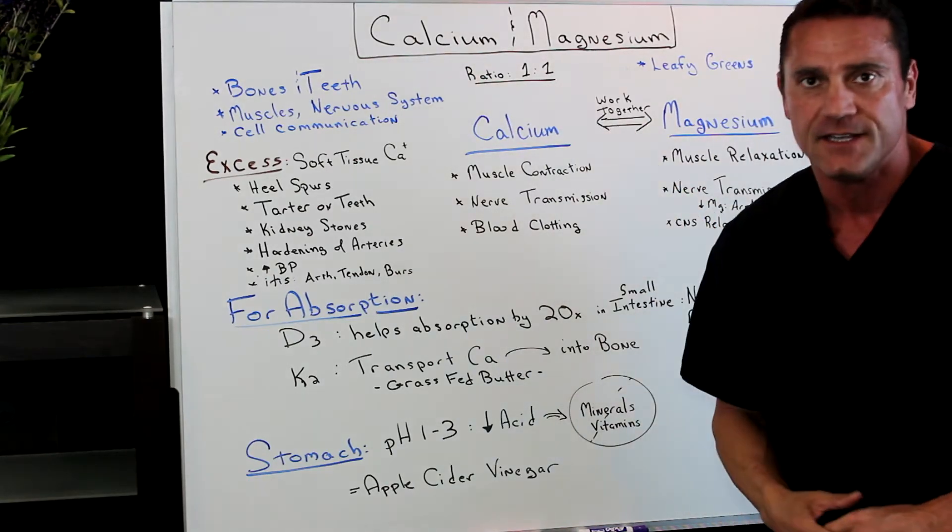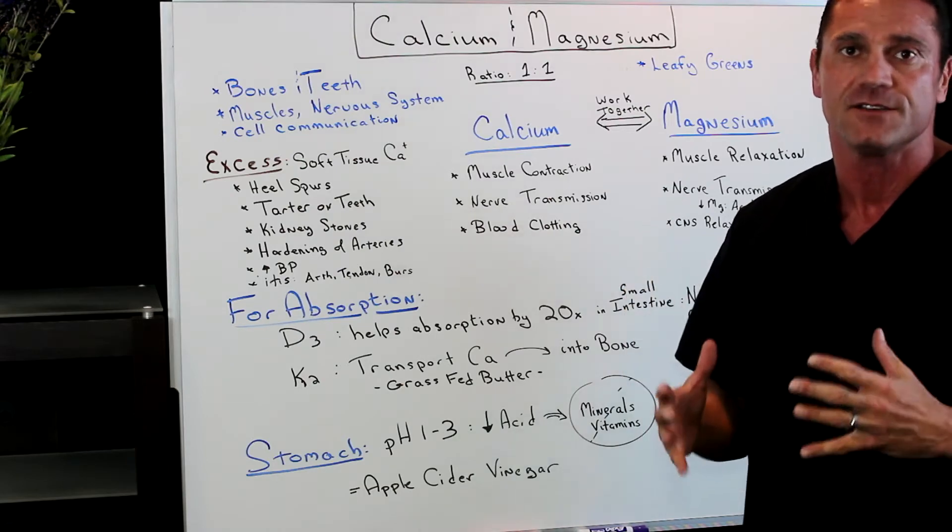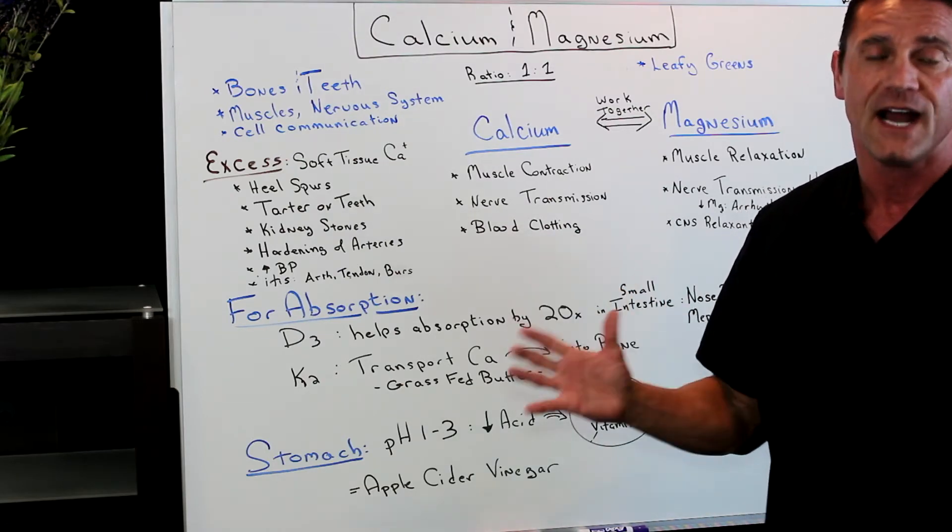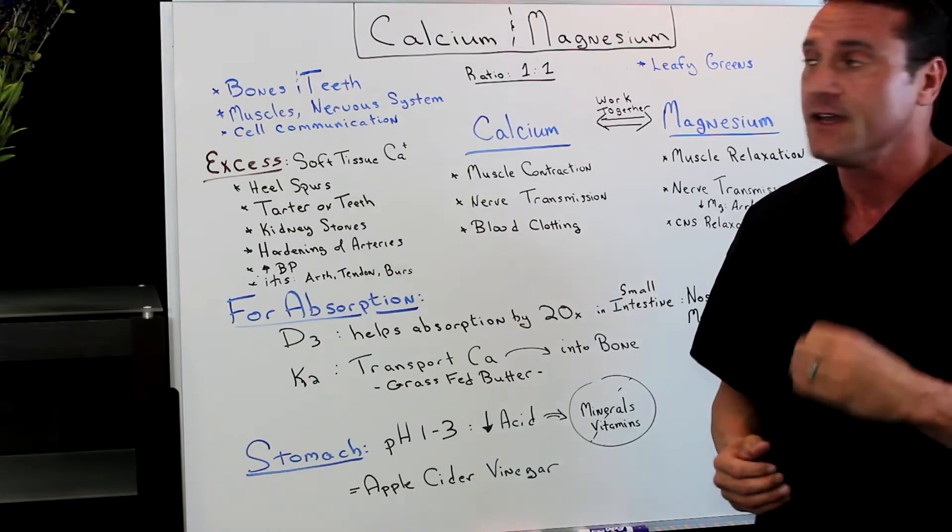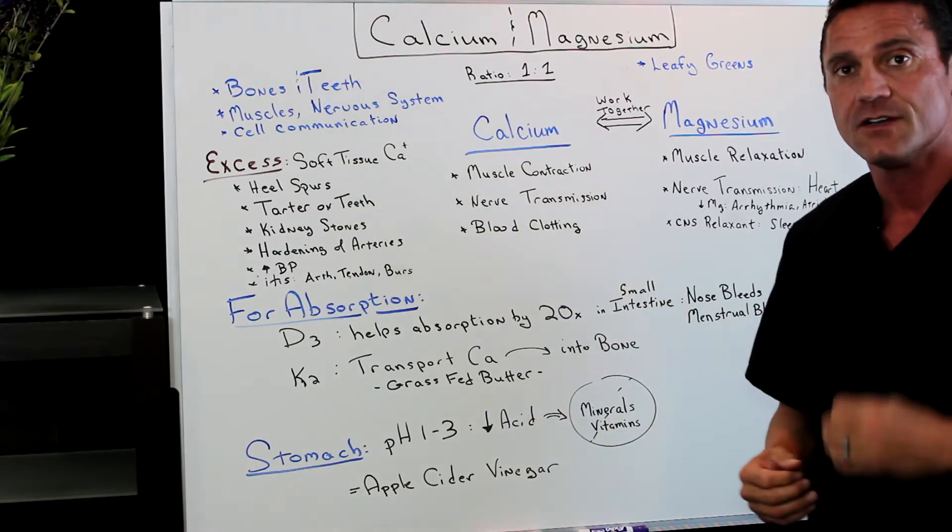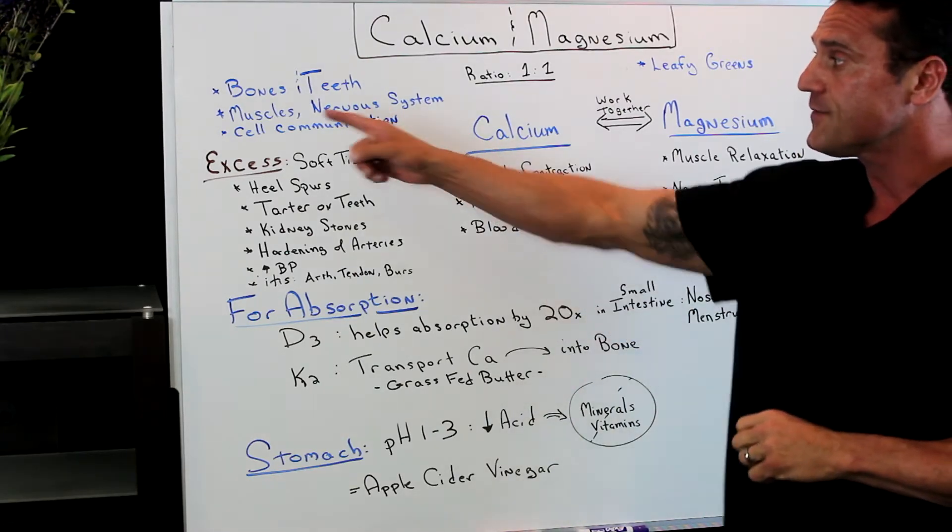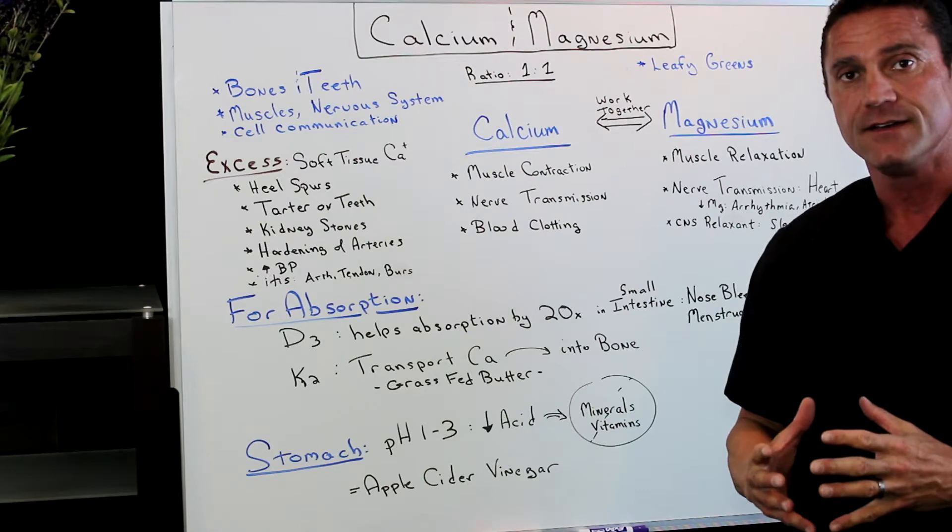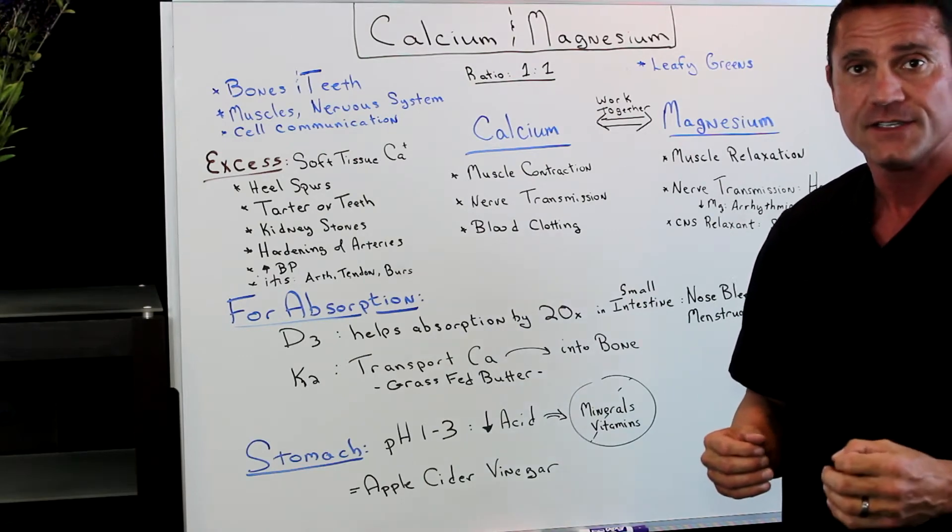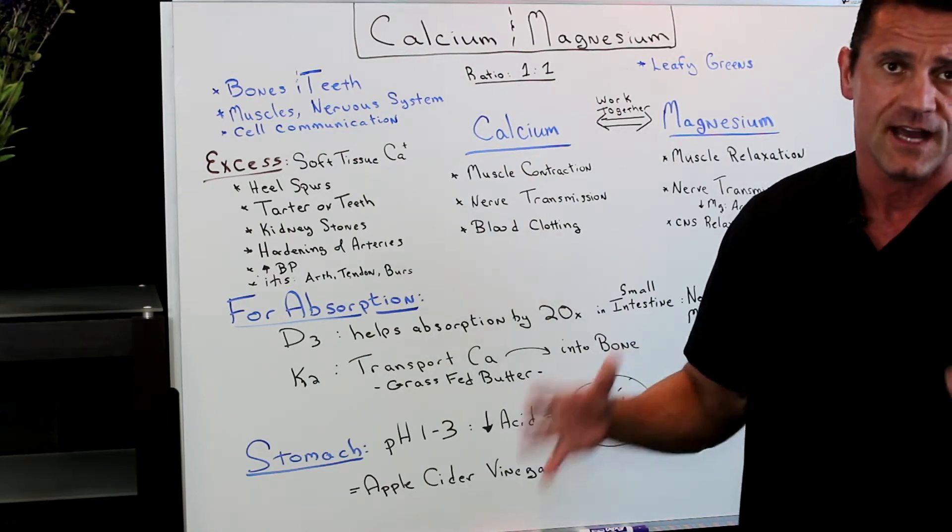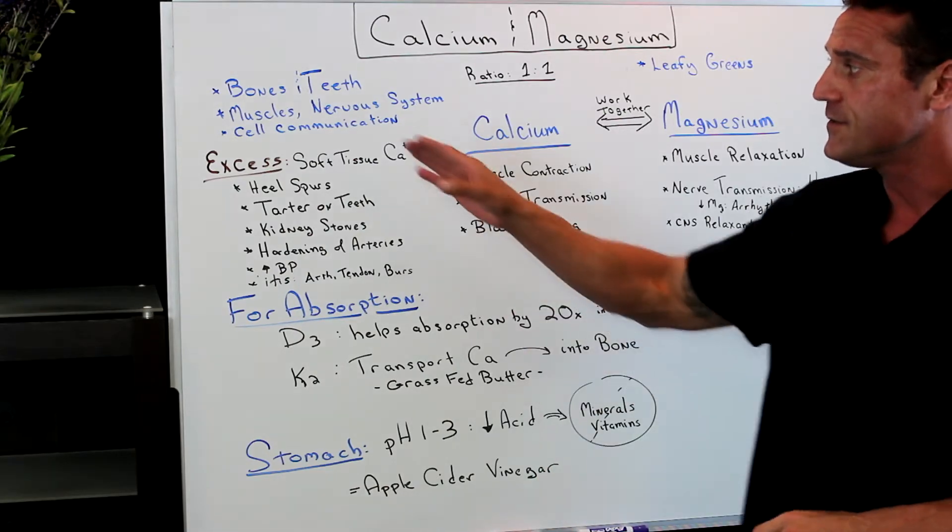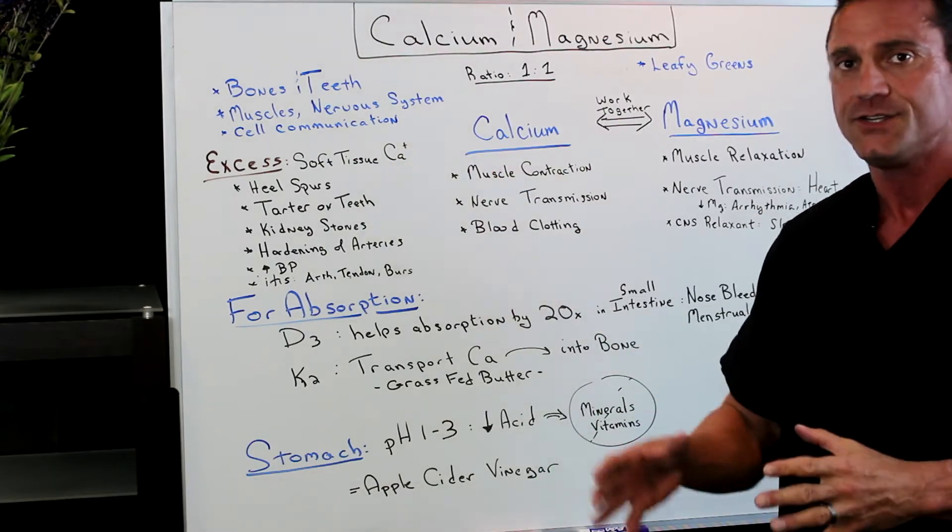Calcium and magnesium are essential minerals that we need for body function homeostasis. We all know that calcium is good for the bones and teeth. It's also good for the muscles, how the muscles contract, how they work, the nervous system, the central nervous system, the peripheral nervous system, the autonomic nervous system. Also, very important in cell communication.